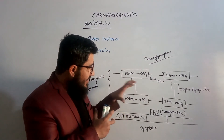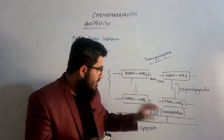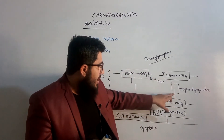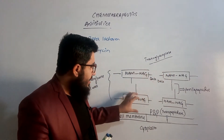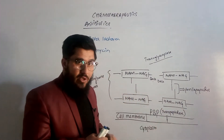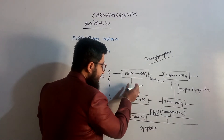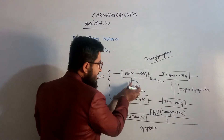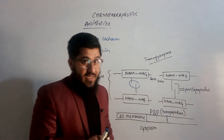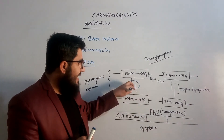First, let us understand how this cell wall formation takes place. Here we have the penicillin binding protein, also named transpeptidase. You can guess its function from the name: it links the peptide chain from one NAM/NAG chain with the peptide from the next NAM/NAG chain. So this transpeptidase cross-links these peptides, thereby linking the upper chain with the lower chain. The main function of the penicillin binding protein is to cross-link the pentapeptides.